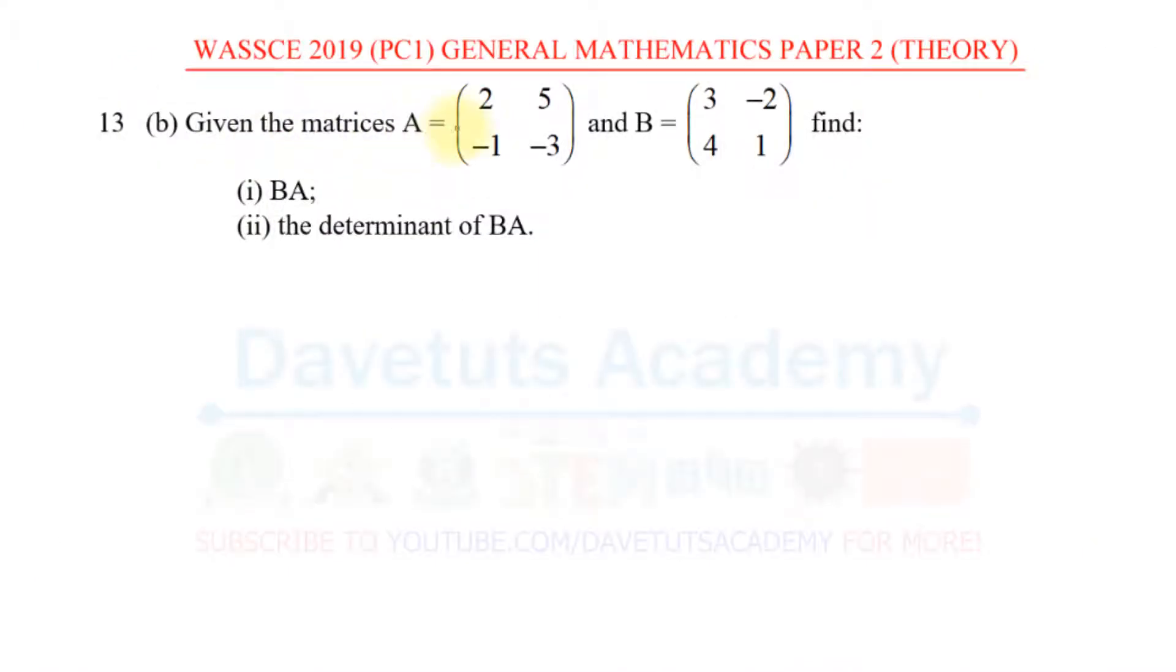Given the matrices A to be 2, 5, minus 1 and minus 3 and B to be 3, minus 2, 4, and 1, we have to find the product BA and the determinant of BA.